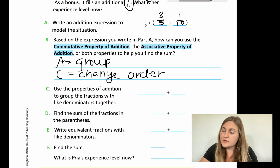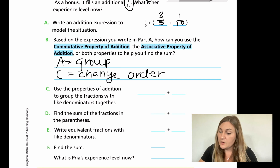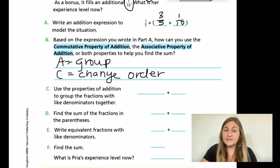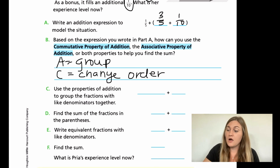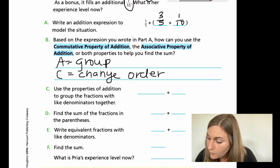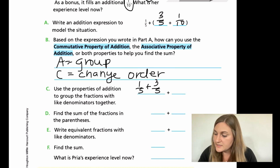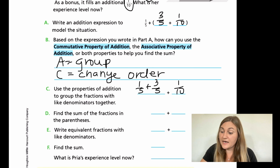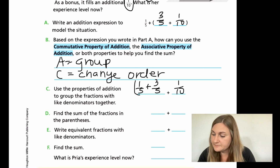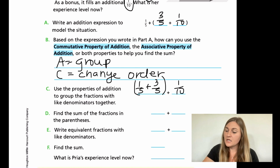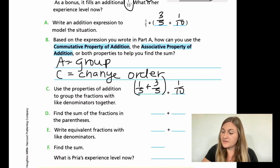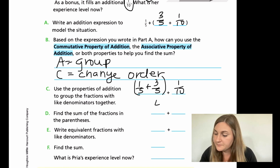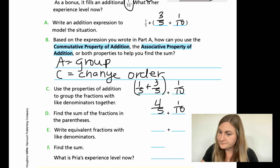For C, it says use the properties of addition to group the fractions with like denominators together. My one-fifth and three-fifths have the same denominator, so I'm going to put them together: one-fifth plus three-fifths, and then separately, one-tenth. For D, find the sum of the fractions in the parentheses. So one-fifth plus three-fifths is four-fifths, plus one-tenth.